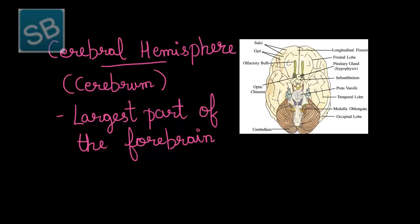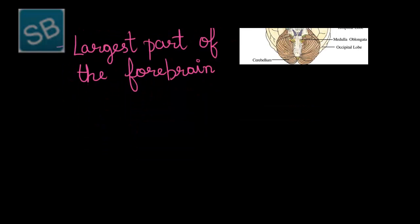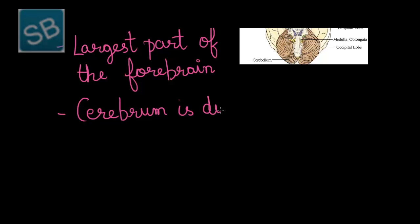The cerebral hemisphere is divided by a longitudinal fissure. This fissure separates different lobes, and thus the entire cerebrum is divided into various lobes.